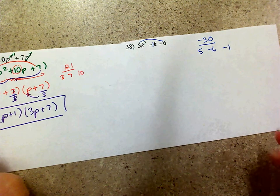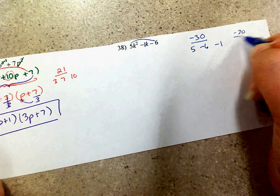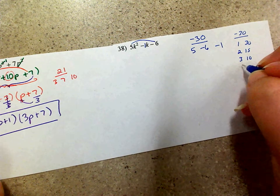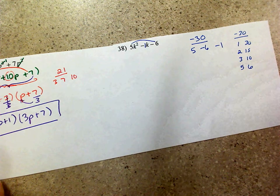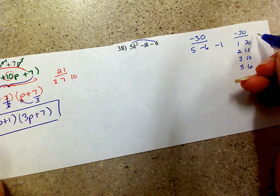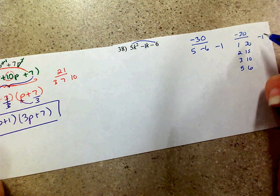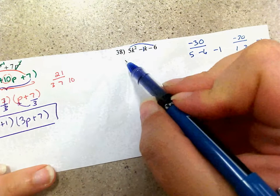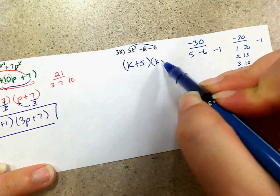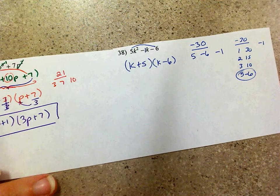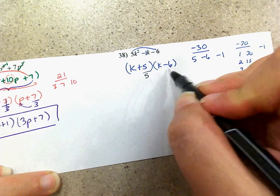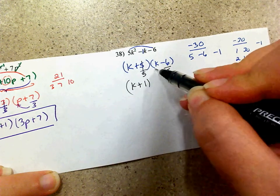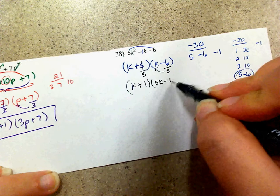If you're unsure how to find the factors, write them out: 1 and 30, 2 and 15, 3 and 10, 5 and 6. You're trying to add up to negative 1 and multiply to get a negative, which means one needs to be negative. The difference of 1 is 5 and 6, and the larger number must be negative, so 5 and negative 6. Now write k plus 5 and k minus 6, then divide by the leading coefficient 5. k plus 5 over 5 simplifies to k plus 1. k minus 6 doesn't simplify, so bottoms up gives 5k minus 6. That's your answer.